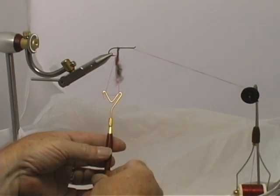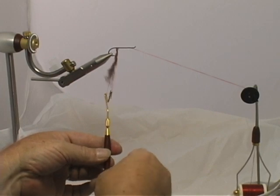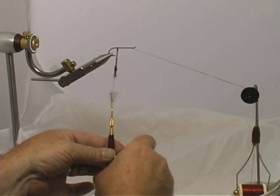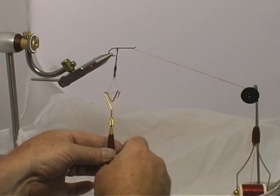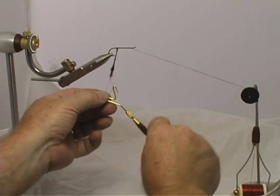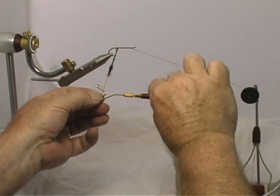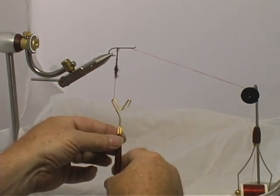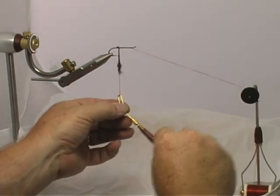Spin the tool, creating a tapered dubbing rope. One half of the tool is then removed from the dubbing loop, and the dubbing is applied to the hook.